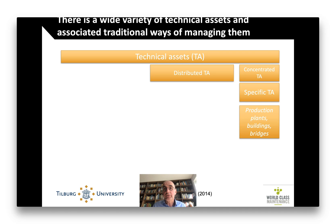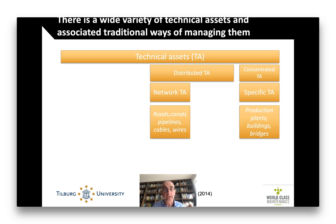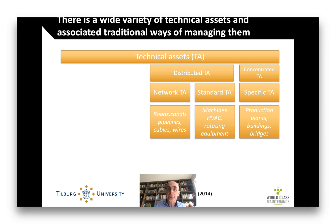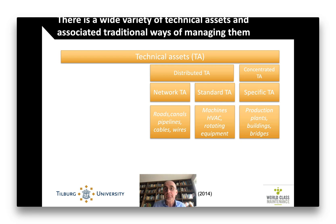Other assets are distributed. They can be distributed in a network, such as the entire road network or the canals, pipelines, cables, wires — so many networks of assets. They can also be distributed not in a network, but simply scattered throughout the country, like machines, air conditioning equipment, or pumps.